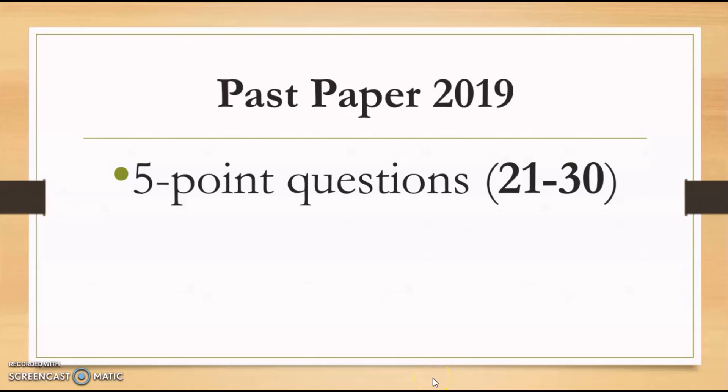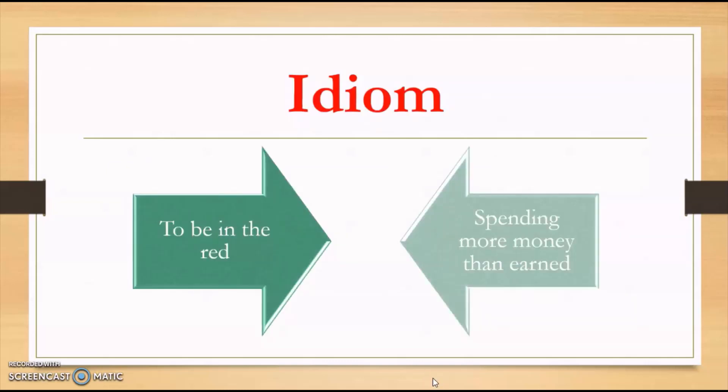Five point questions again test your different language skills. From question 21 to question 30, there are 10 questions of this five point score. The questions given in this category can be about an idiom. For example, to be in the red means spending more money than earned. It is framed in the 2019 paper as I cannot afford to go on that holiday anymore. My bank account is in the red and my bank manager isn't the most flexible of people. So keeping bank account in red means you're spending more money than you have earned.